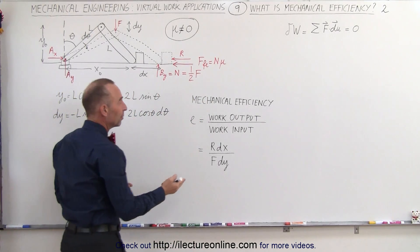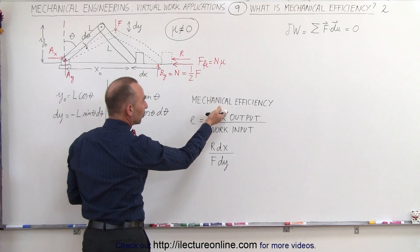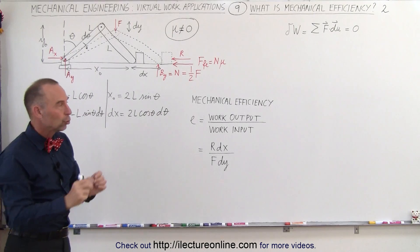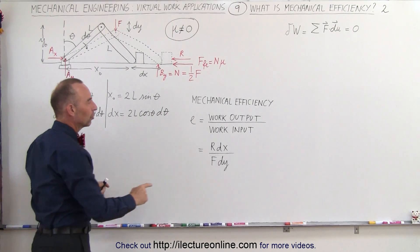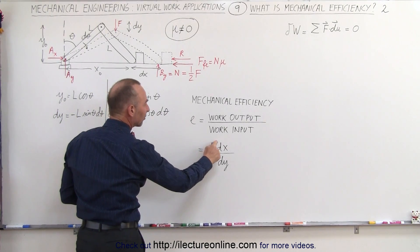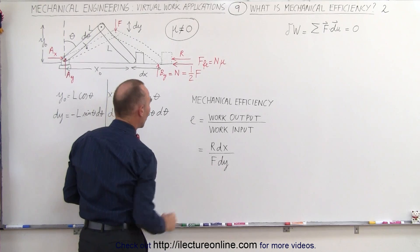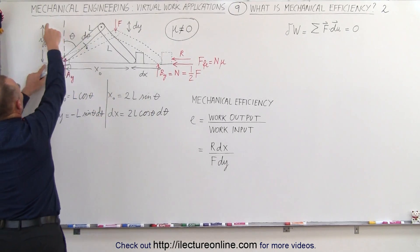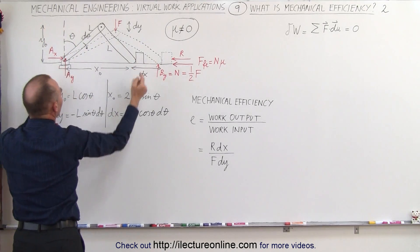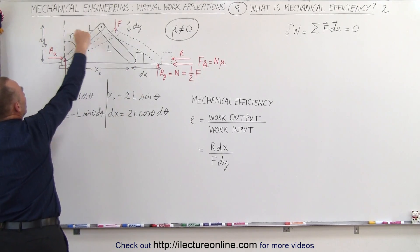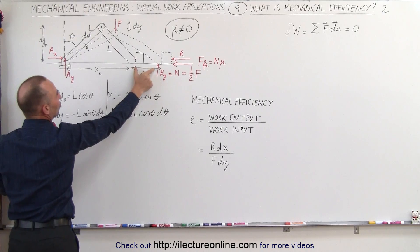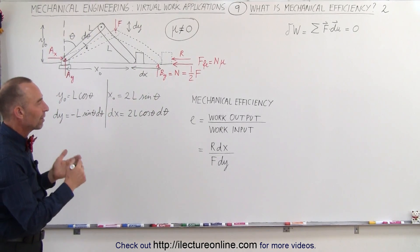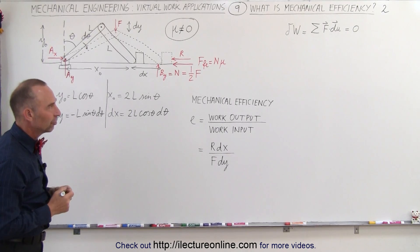Mechanical efficiency is simply the ratio of the work output divided by the work input. The work output is the usable work output, so it's r times dx divided by f times dy. We've already established the initial distances y sub naught and x sub naught, and the differentials — the change in y and the change in x. Now let's use virtual work to figure out the mechanical efficiency.